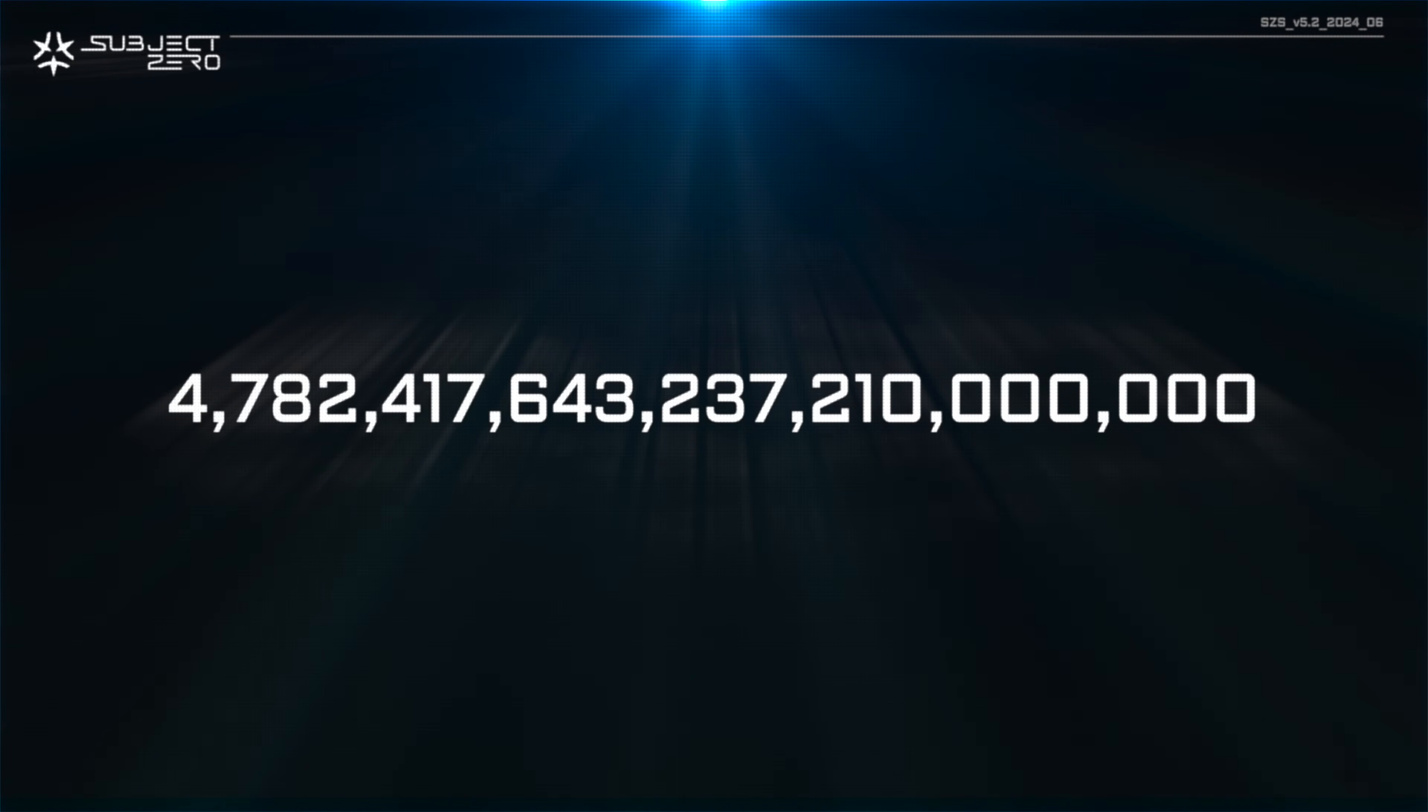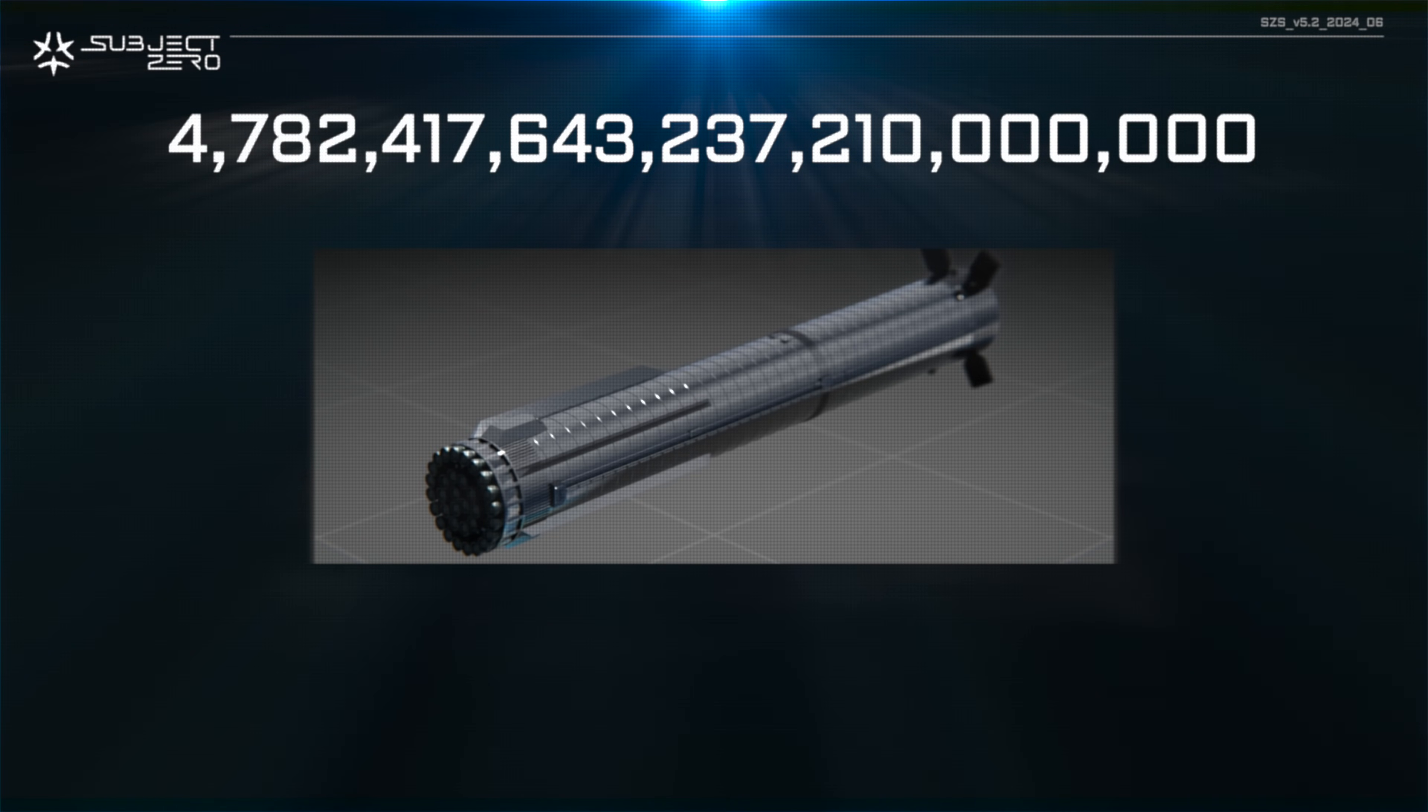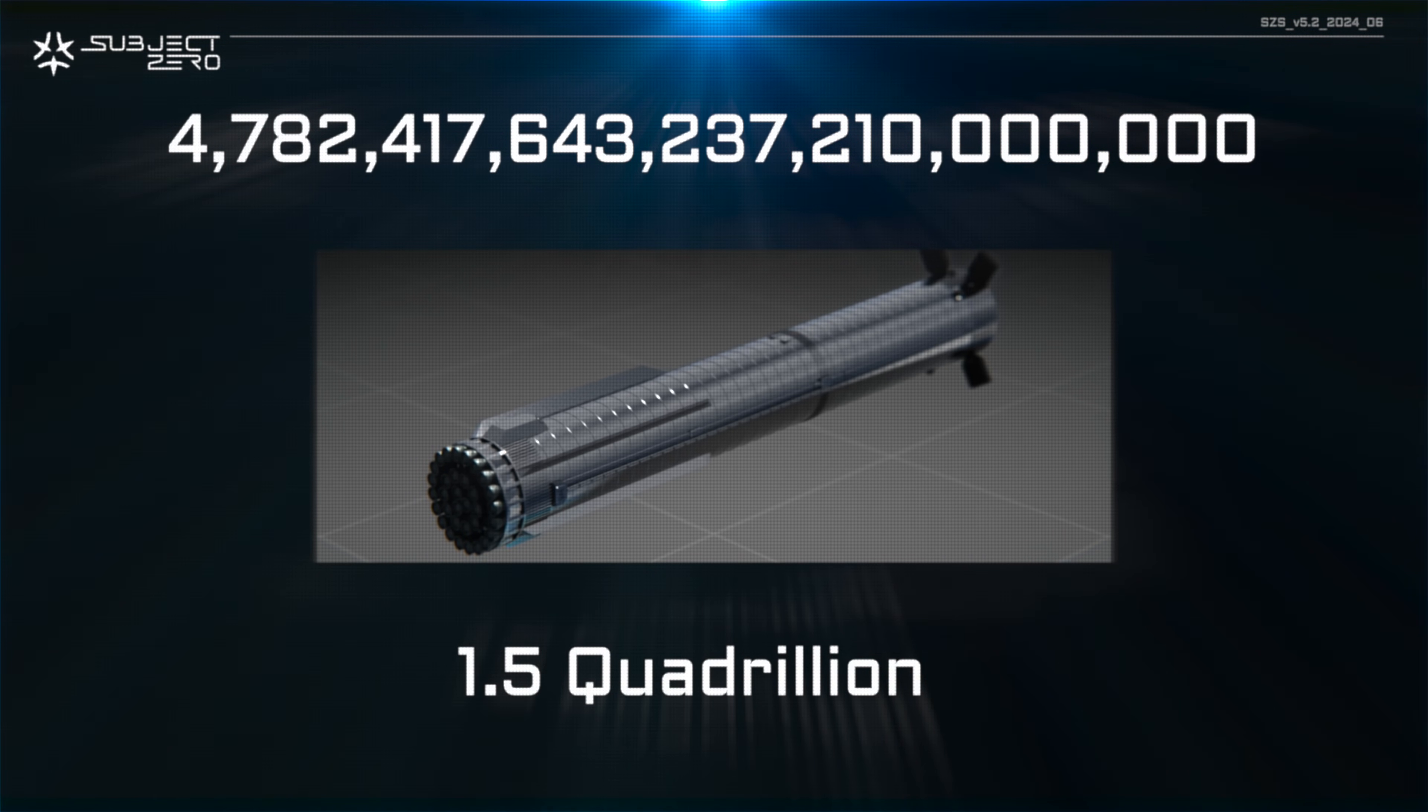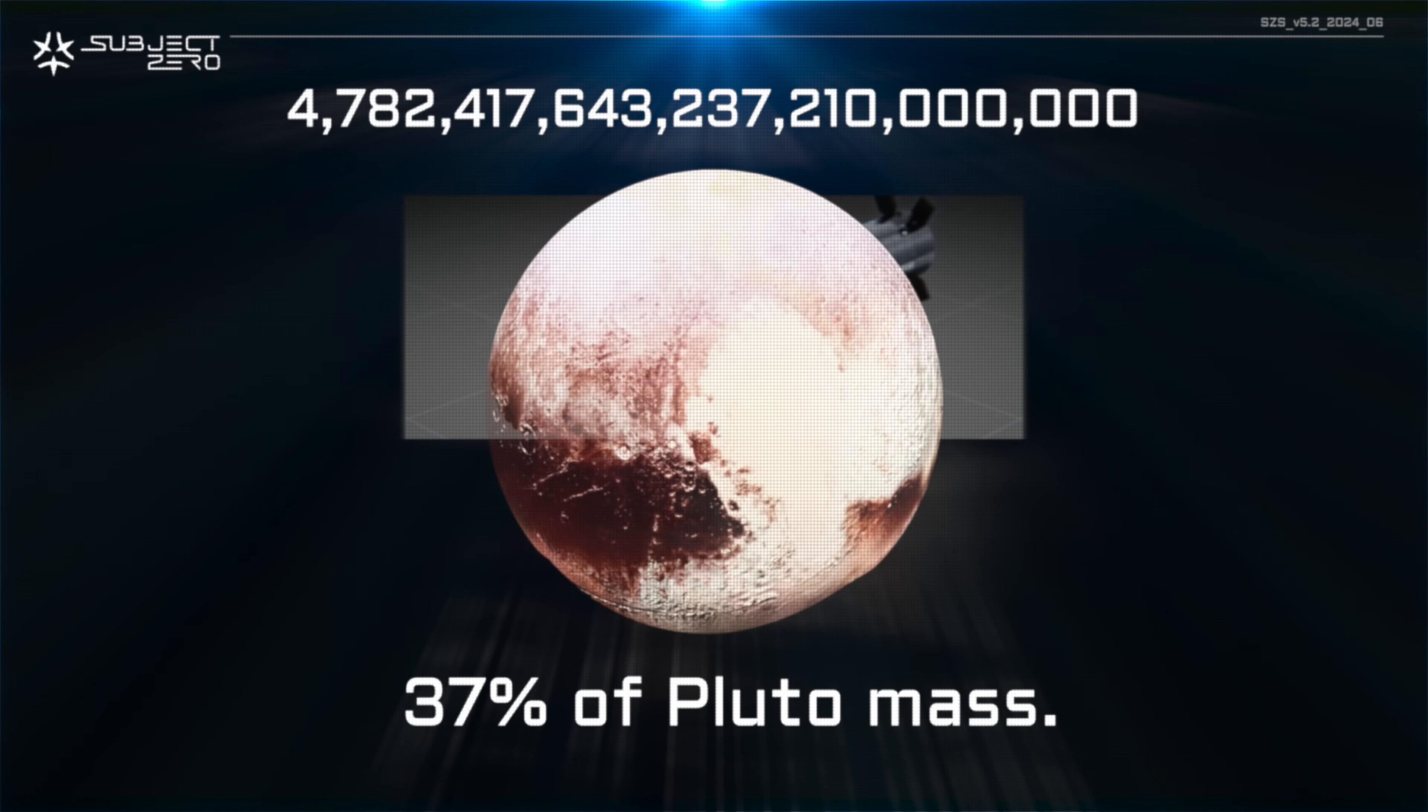To help visualize it, we will use the Starship Stage 1 that can carry 3,500 tons of fuel. In other words, this number is equivalent to 1.5 quadrillion Starship Stage 1, or 37% of Pluto's mass.